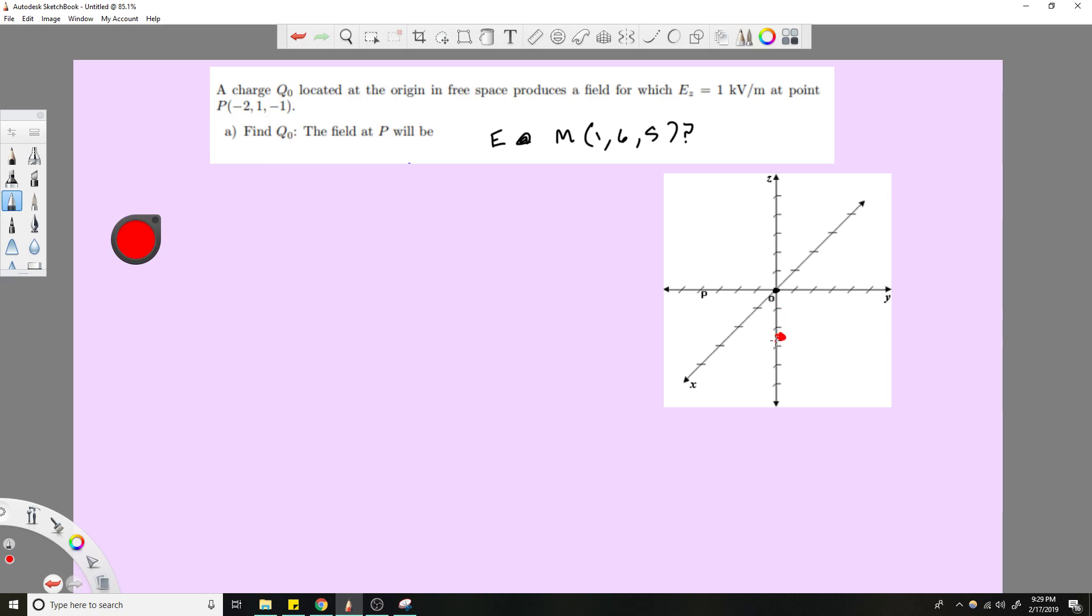And we want to know, or we know the E field, the E sub Z, so the Z component of the E field at this P right here, and this is point we'll call this O, but it's also Q naught. So the first thing we need to do is figure out what equation we're going to use, and that's going to be the electric field equation, which is Q over 4 pi epsilon naught R squared.